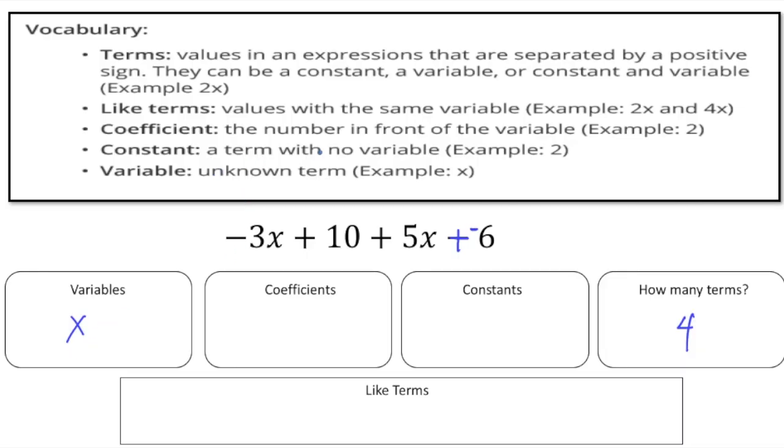A coefficient is the number in front of a variable. So here we have negative 3x. So there's the variable, right? So the coefficient is the negative 3. And we have another coefficient over here, because we have 5x. So the 5 is the coefficient.